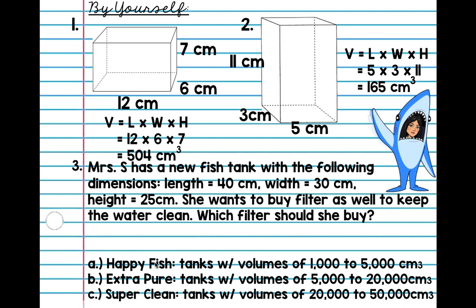So, in order to figure out which one I'm going to buy, I'm going to find my volume first. So, go ahead and do your length times width times height. Okay, so we have 120 times 25. I know 25 times 12 is 300. So, if I put a zero behind that, we have 30,000 centimeters cubed.